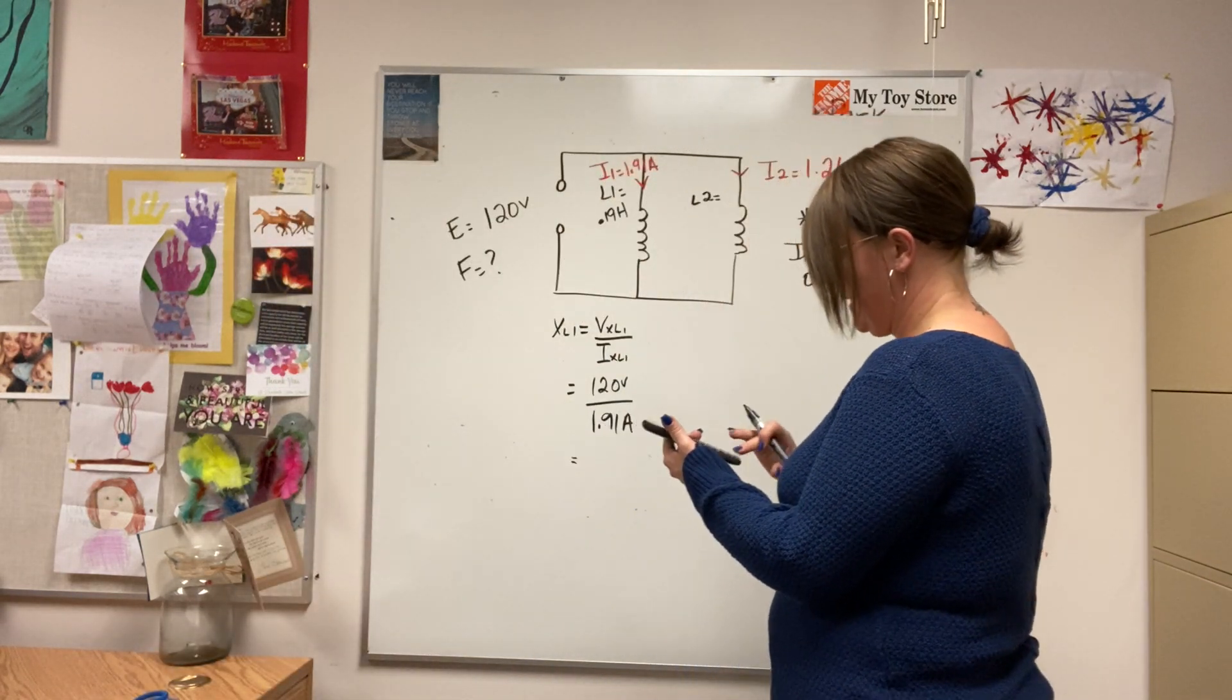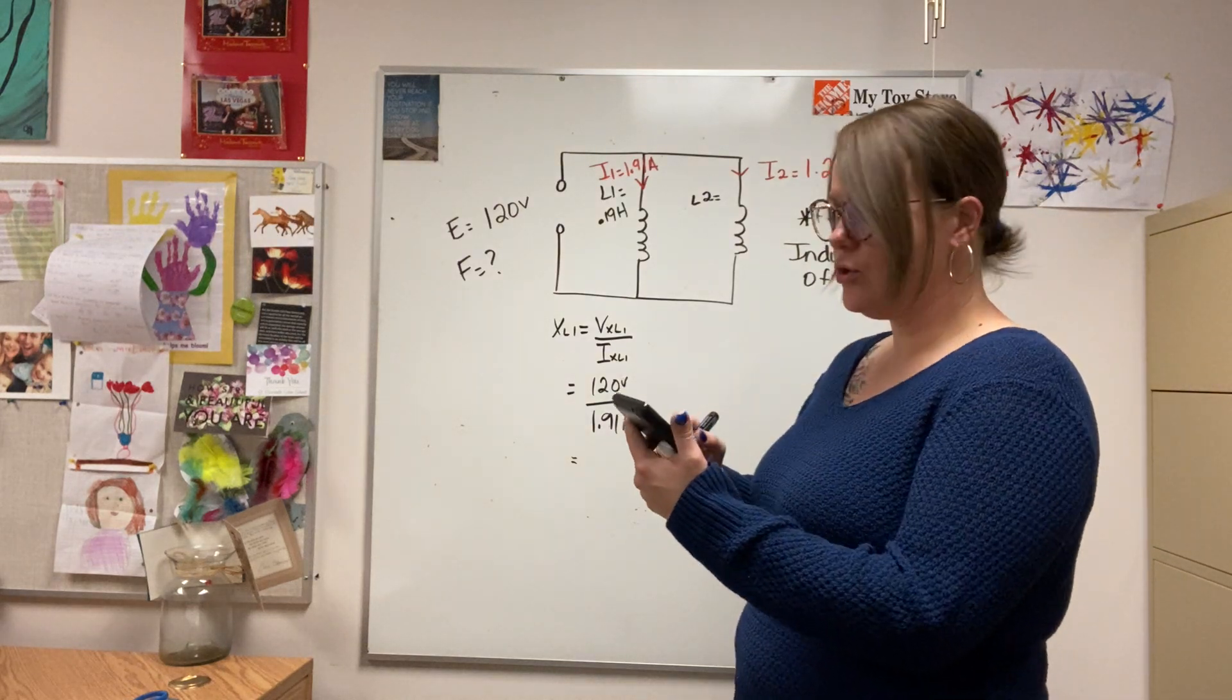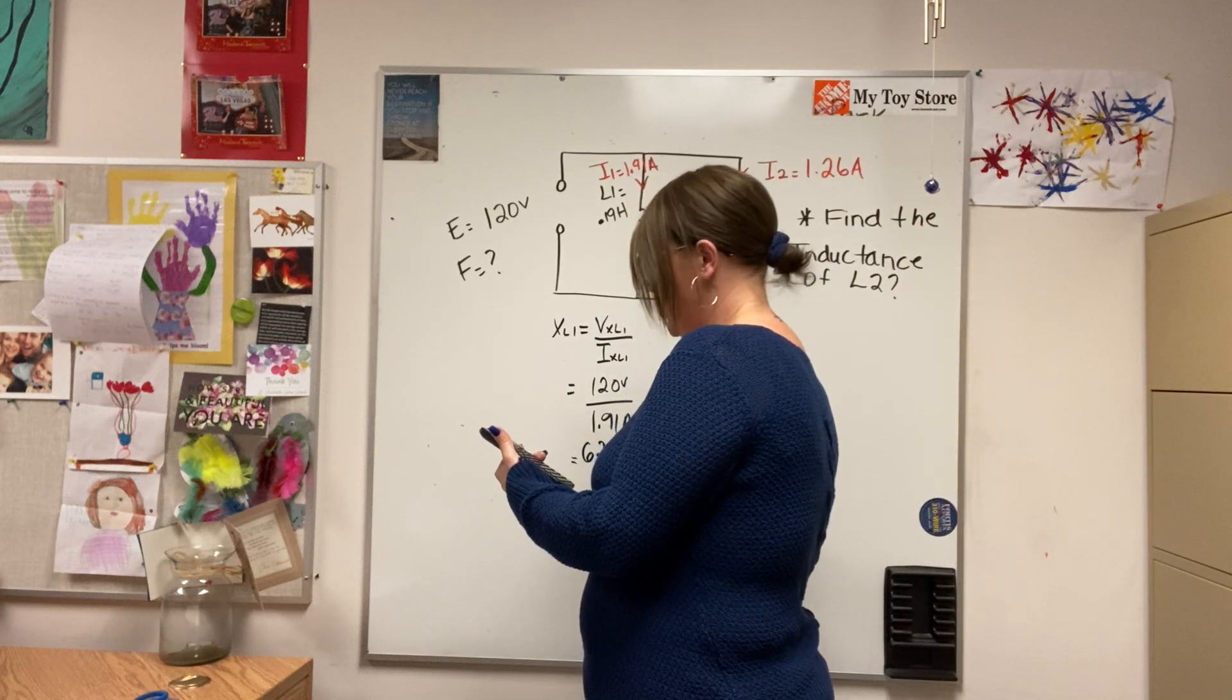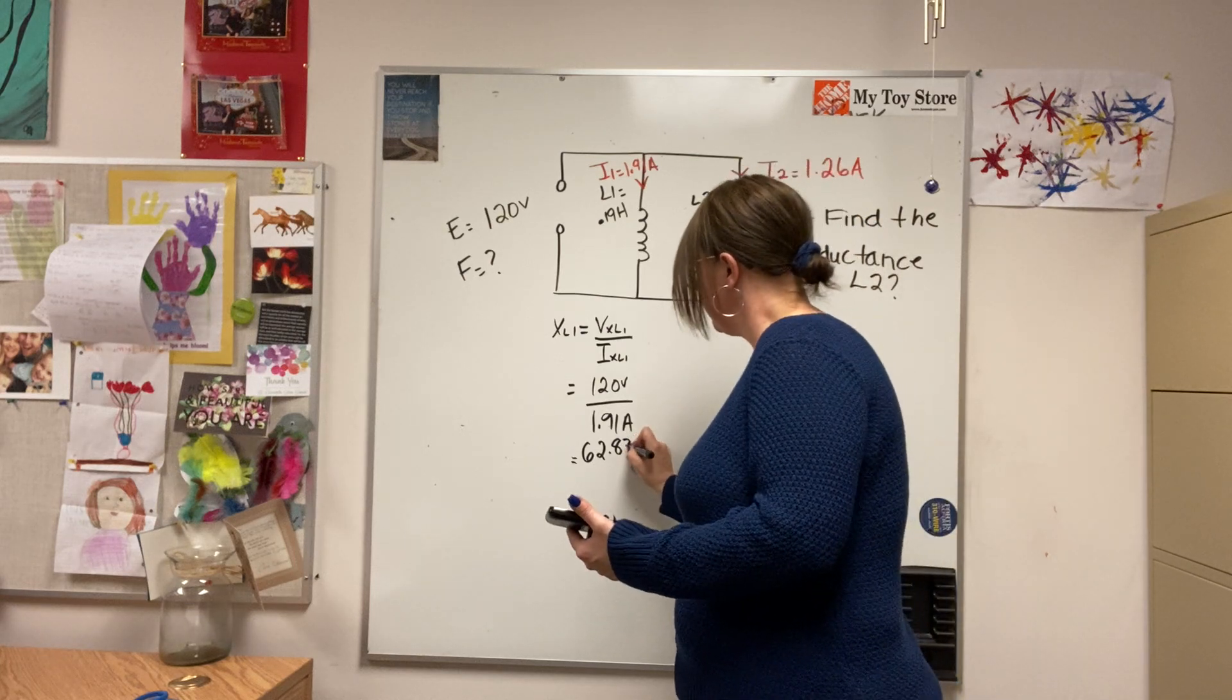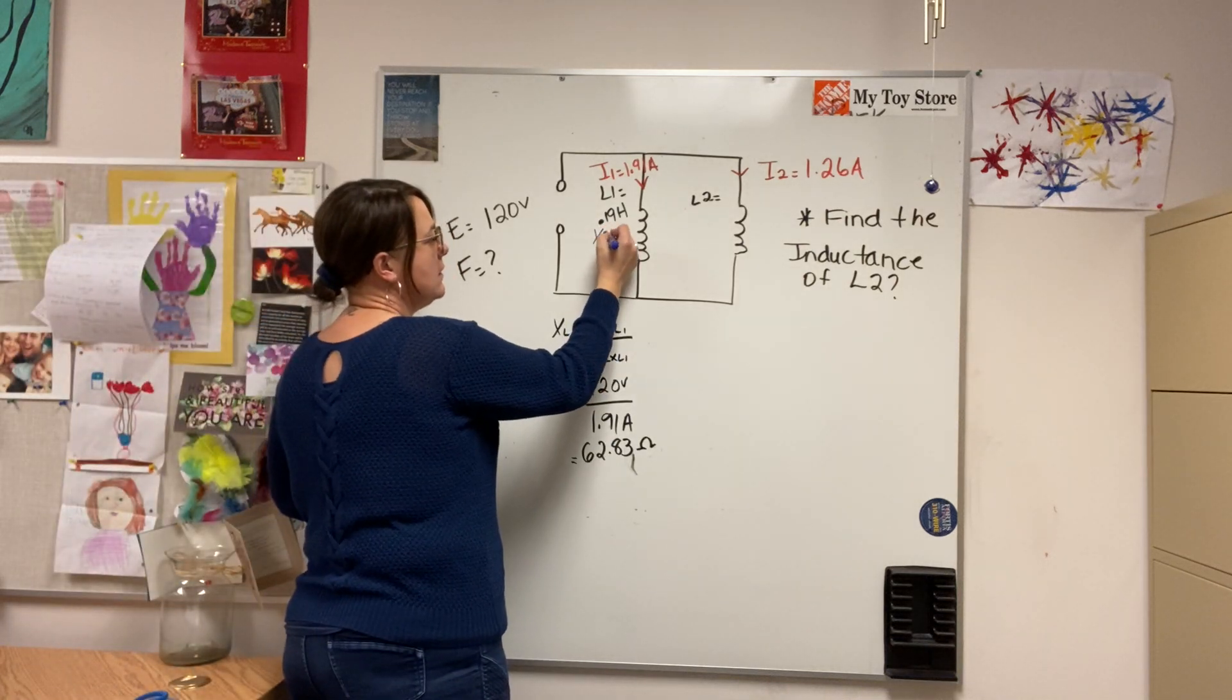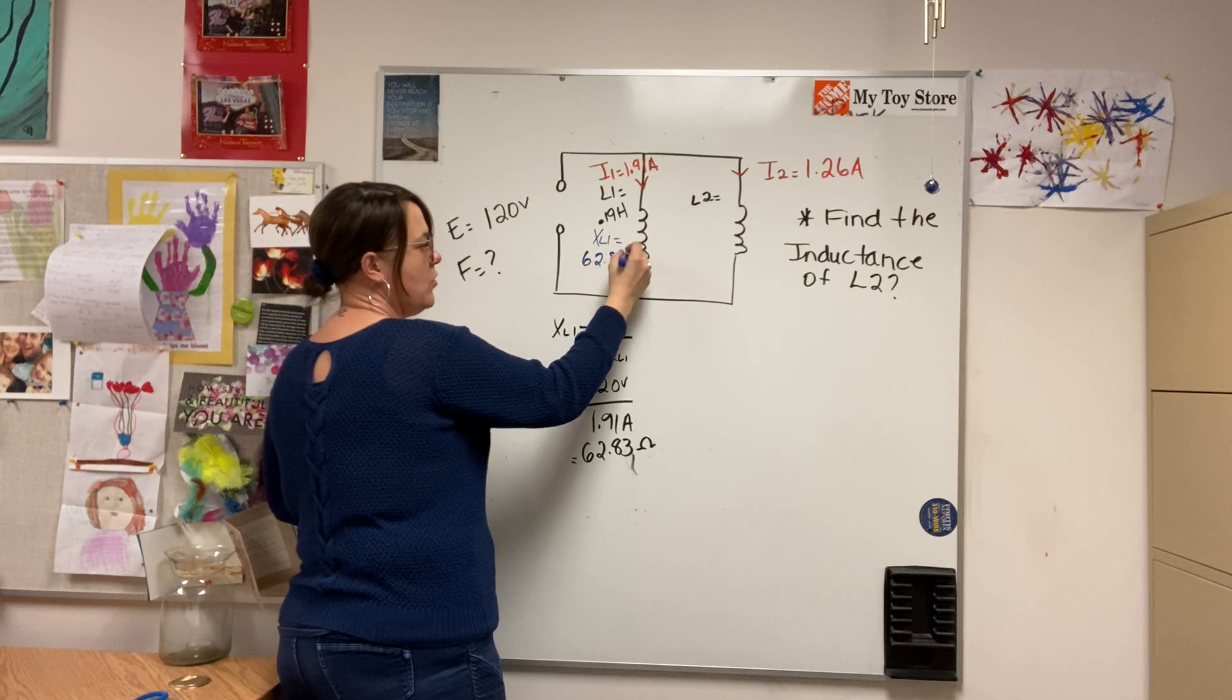120 divided by 1.91 equals 62.82, or 83 rather, ohms. So that will be my XL, 62.83 ohms.